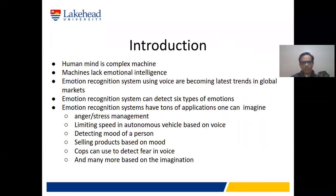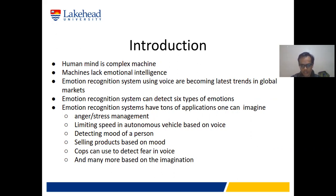The human mind is a complex machine and most machines these days lack emotional intelligence. Emotional intelligence is the ability to understand emotions the way a human being can. Emotion recognition systems using voice are one of the latest trends in the digital market. Examples of these systems are Alexa, Google Voice Assistant, Cortana, etc.